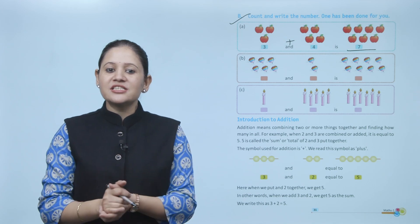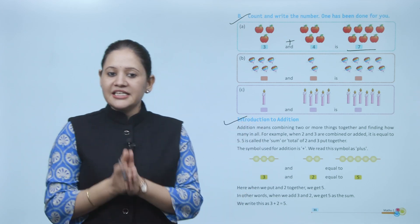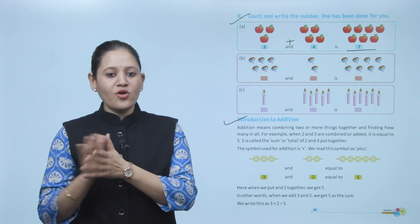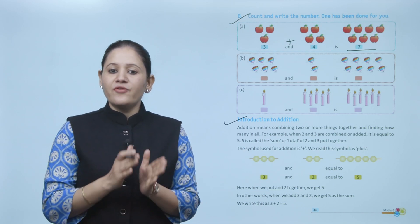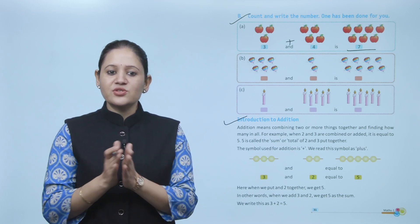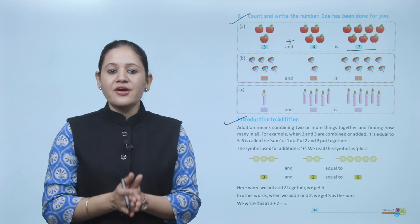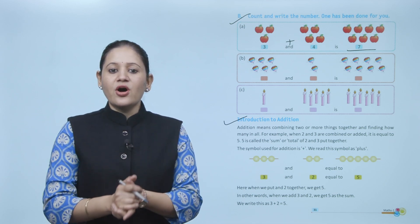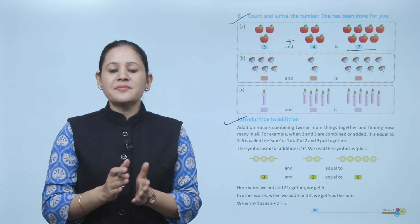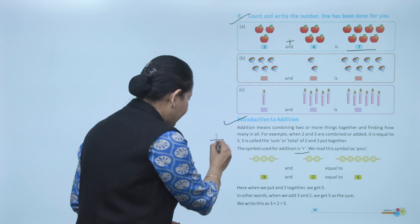Next is introduction to addition. Addition means combining two or more things together and finding how many in all. For example, when two and three are combined or added it equals five. Five is called the sum or total. The symbol used for addition is the plus sign.